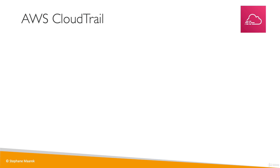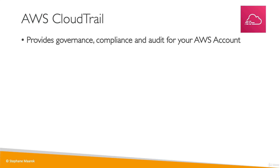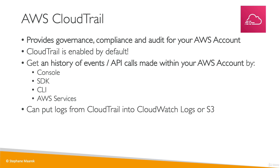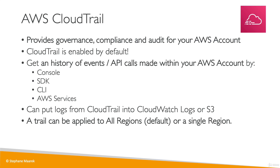CloudTrail is a way to get governance, compliance, and audit for your AWS account. CloudTrail is enabled by default and gives you a history of all the events and API calls made within your AWS account by the console, SDK, CLI, and other AWS services. You can send these logs into CloudWatch Logs or Amazon S3, and you can create a trail applied to all regions or a single region to accumulate events into one specific S3 bucket.